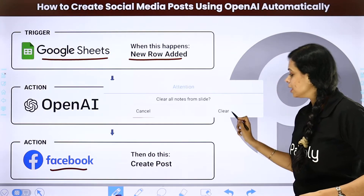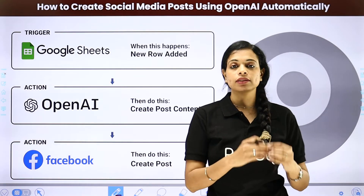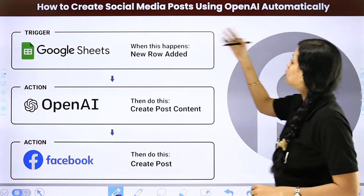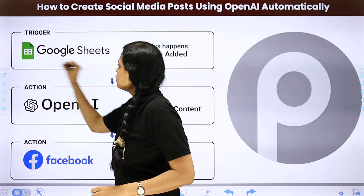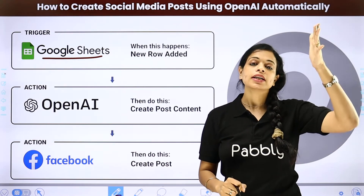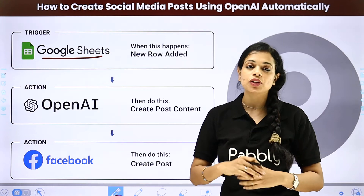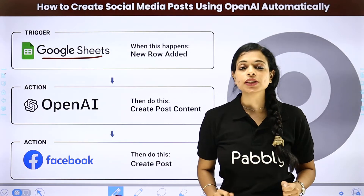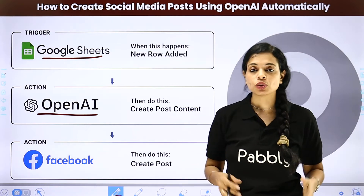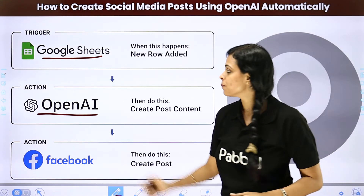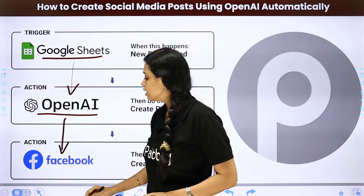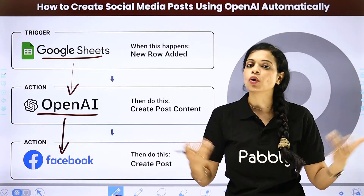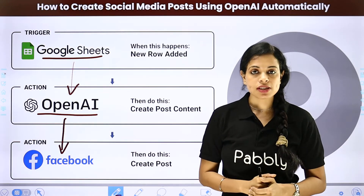The last one we are going to see is: not only posting and engaging with your clientele is possible through automation, but you can also create the content. How to create social media posts using OpenAI automatically? You have your Google Sheet or any other spreadsheet with the titles of different blogs or certain captions. You want to first create content and then post it. You can do this using OpenAI, an artificial intelligence and automation company that helps you generate human-like content. You can post it on different platforms — Facebook, WhatsApp, Slack, Discord — or just create a document and save it for yourself.